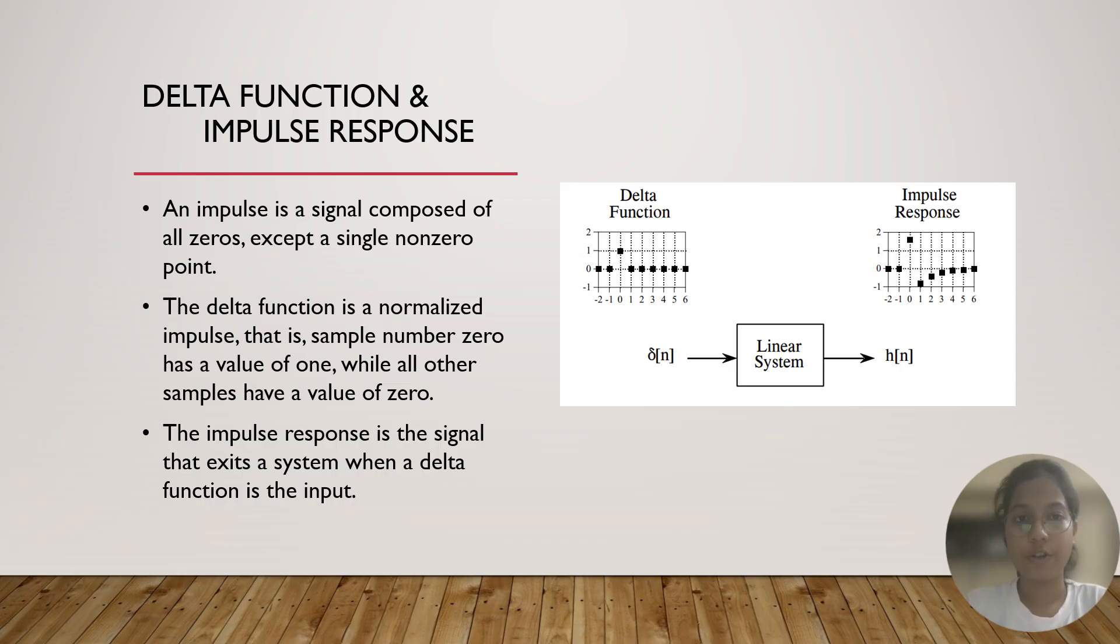Before getting into convolution, let us talk about delta function and impulse response. First, let's go over what an impulse signal is. The impulse signal is composed of all zeros except a single non-zero point. It's just a spike signal. It gets a non-zero value and then again goes back to its normal value 0.